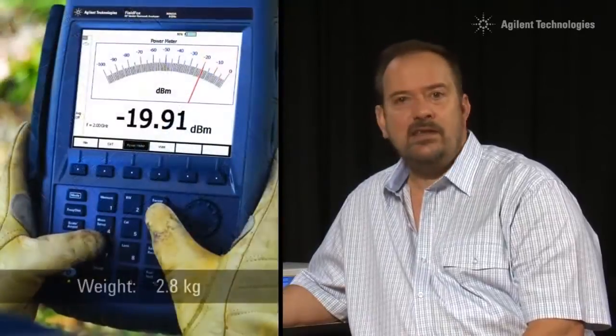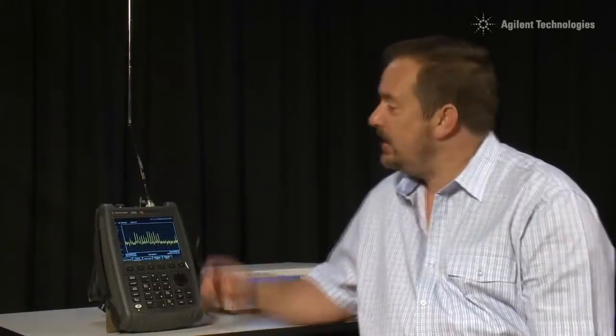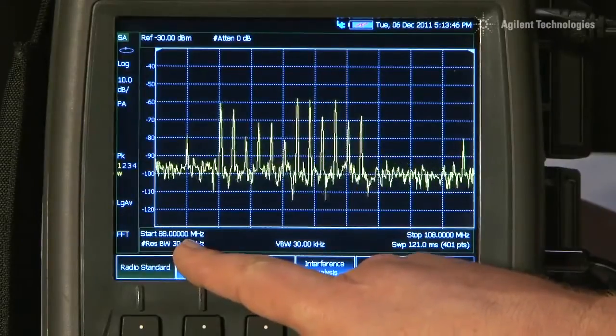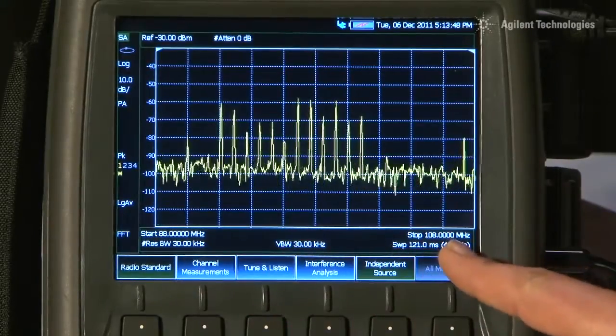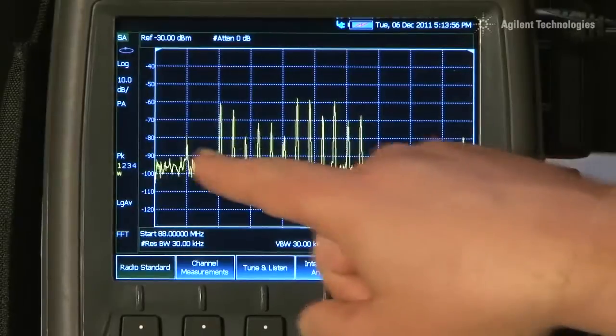Best of all, it weighs only 2.8 kg including the battery. Let's start by measuring signals from this cheap whip antenna I have here. I have set the start frequency to 88 MHz and the stop frequency to 108 MHz, so we have tuned in to the FM broadcast band, and here you can see all of the FM broadcast stations in our locality here.